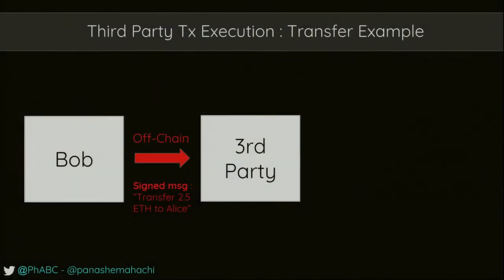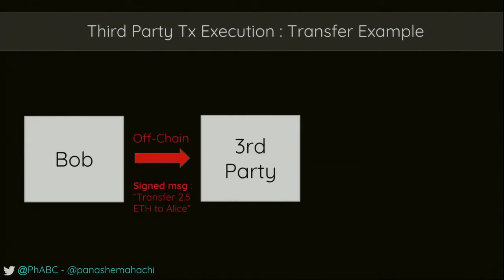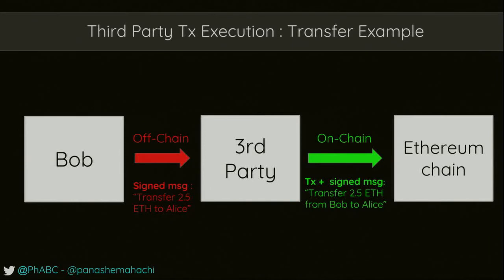That's a third party transaction execution, and I think this is really game changing. If I Bob want to transfer funds but don't want to pay for it, I can sign a message off chain saying someone transfers 2.5 ETH to Alice. Then there's a third party — it could be, as Alex was saying, a subscription model: I pay you $10 a month, and you will pay for a hundred transactions a month, similar to SMS. So you sign a message, and this third party sends the transaction on chain with the signed message, and that transfers 2.5 ETH from Bob to Alice.